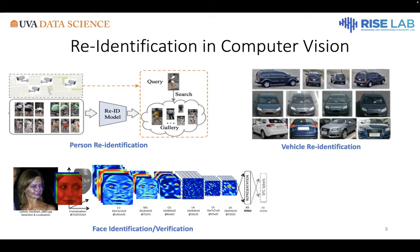We can see many relevant problems in the computer vision field — not about fish, but we can borrow ideas from them. In all those cases, we have visual inputs — either images or videos — and we need to do matching by comparing a query image with a gallery image. The key is always how to learn better features and better representations from the data.